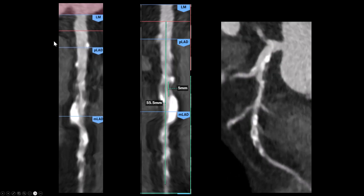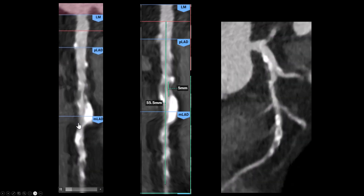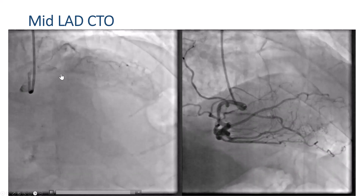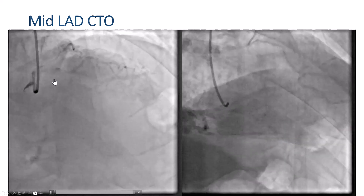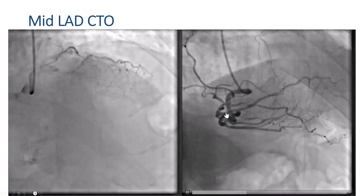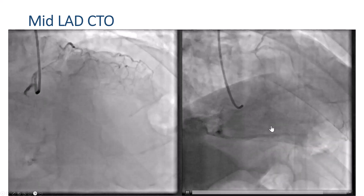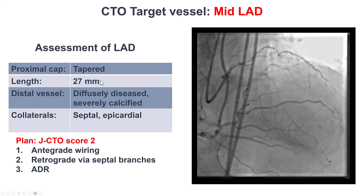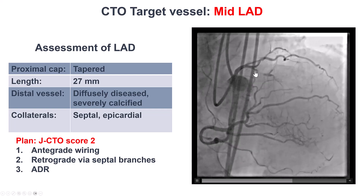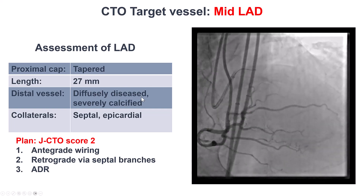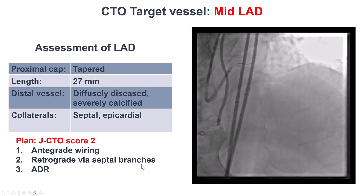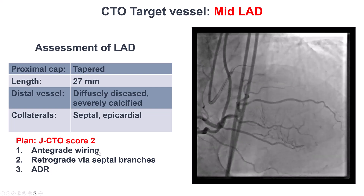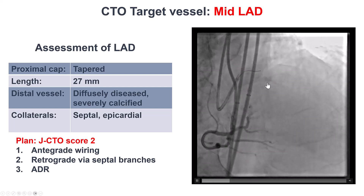These are the multi-planar reconstructions showing the significant eccentric calcification distally. On the coronary angiogram, as suspected from the CT, the occlusion is fairly short. We see calcium especially distally and also some calcium proximal. The right coronary artery seems okay, and there are epicardial as well as septal collaterals supplying the LAD. Based on the dual injection, we have a tapered entry, a short occlusion length, diffusely diseased distal vessel, and calcification, with both septal and epicardial collaterals. Our plan was to try antegrade wiring first; if that didn't work, retrograde through septals, leaving ADR as the last option because of several diagonal and septal branches near the occlusion.